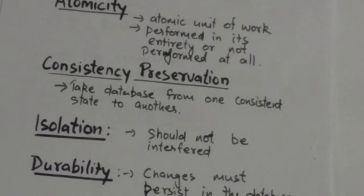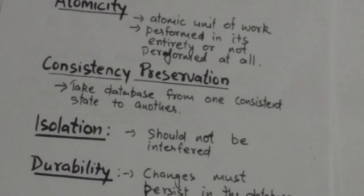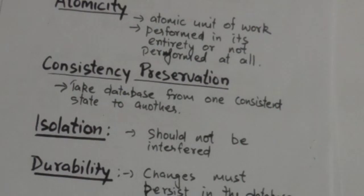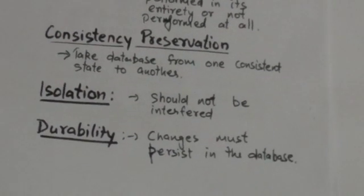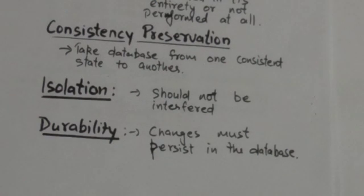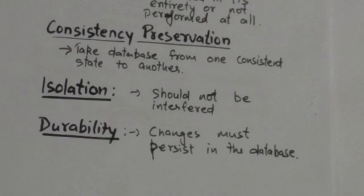Consistency preservation means if a transaction is executed completely from beginning to end without interference from other transactions, it should take the database from one consistent state to another. A consistent state satisfies the constraints specified in the schema. Isolation means the execution of a transaction should not be interfered with by any other transactions executing concurrently.